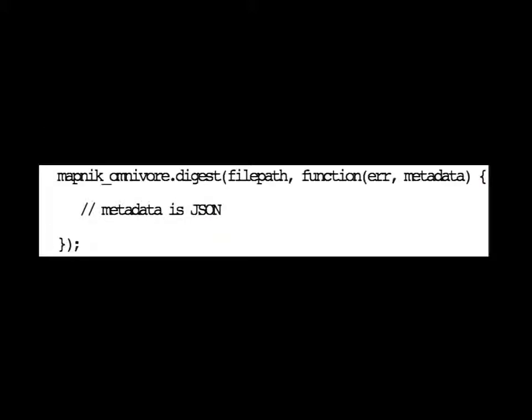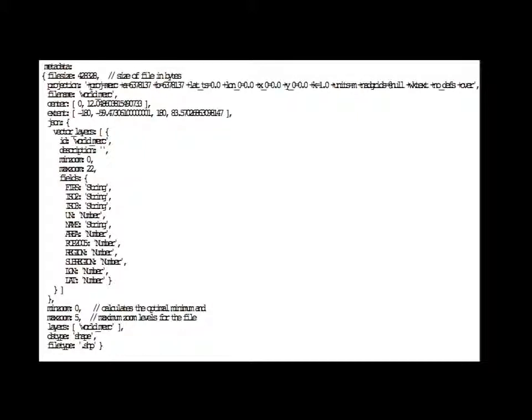A couple of examples of modules using Node GDAL and Node Mapnik. Mapnik Omnivore is an open source module where you throw it a file and it spits out the metadata — essentially like GDAL info. It gives you metadata in JSON: things like file size, projection, layers. It even calculates what the min zoom and max zoom should be based on file size. For raster data, instead of file size, it calculates optimal zoom using pixel resolution.